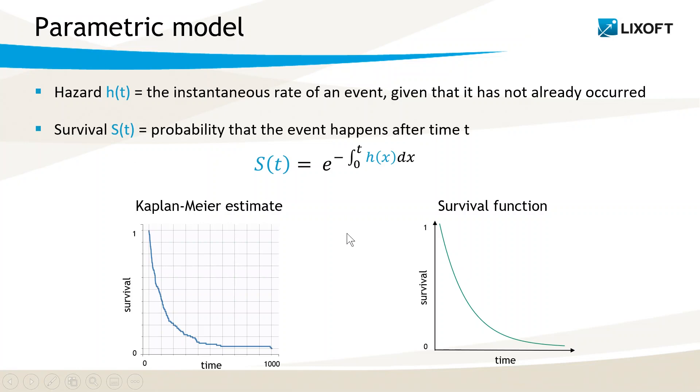The modeling approach used for TTE analysis in Monolix is parametric, which means that the Hazard function must be fully specified and can depend on parameters with inter-individual variability estimated with the population approach. To choose a good model, we use the Kaplan-Meier estimate, which gives an idea of the shape of the Survival function. This is a non-parametric statistic equal at each time to the fraction of living patients from the dataset.